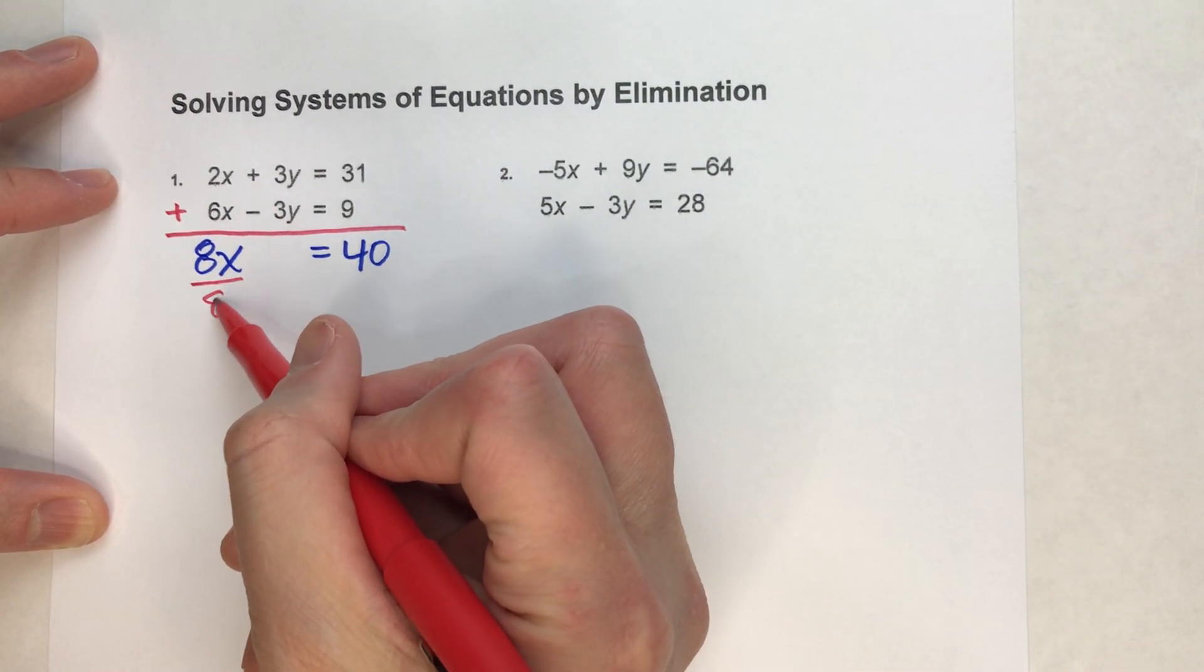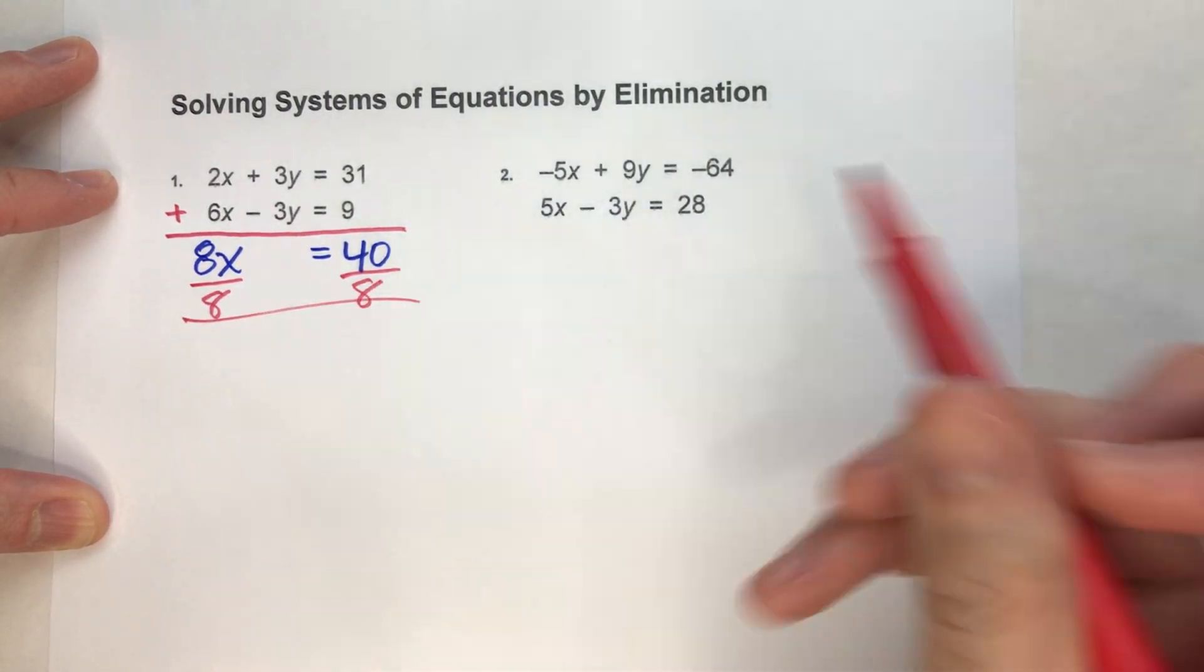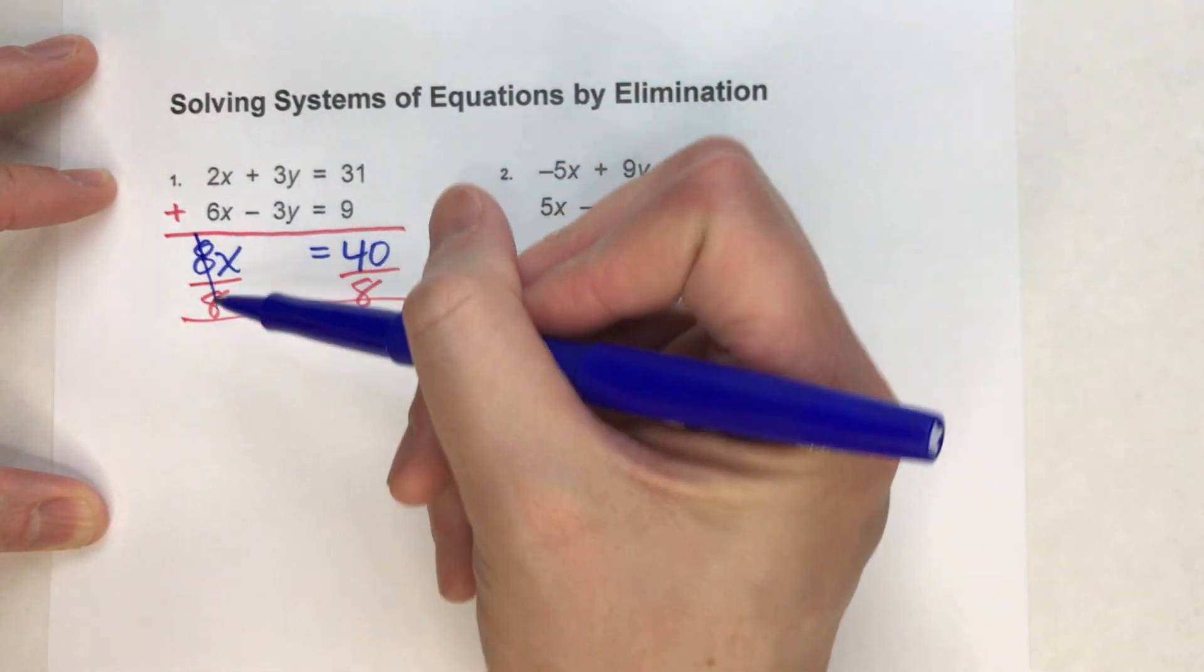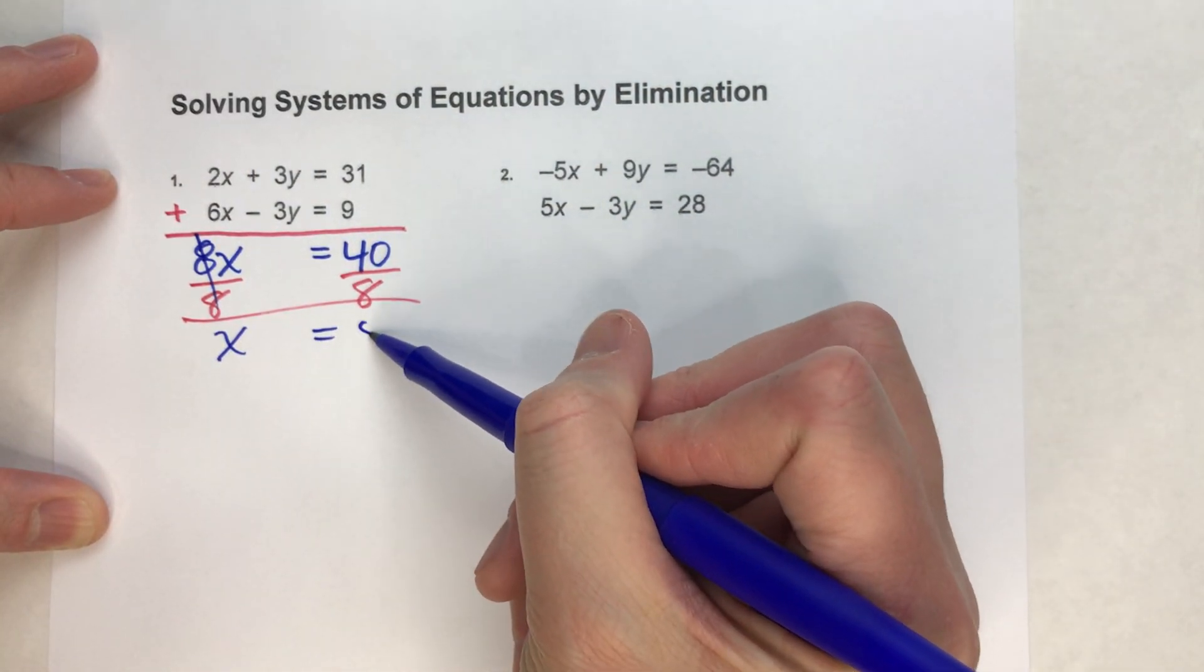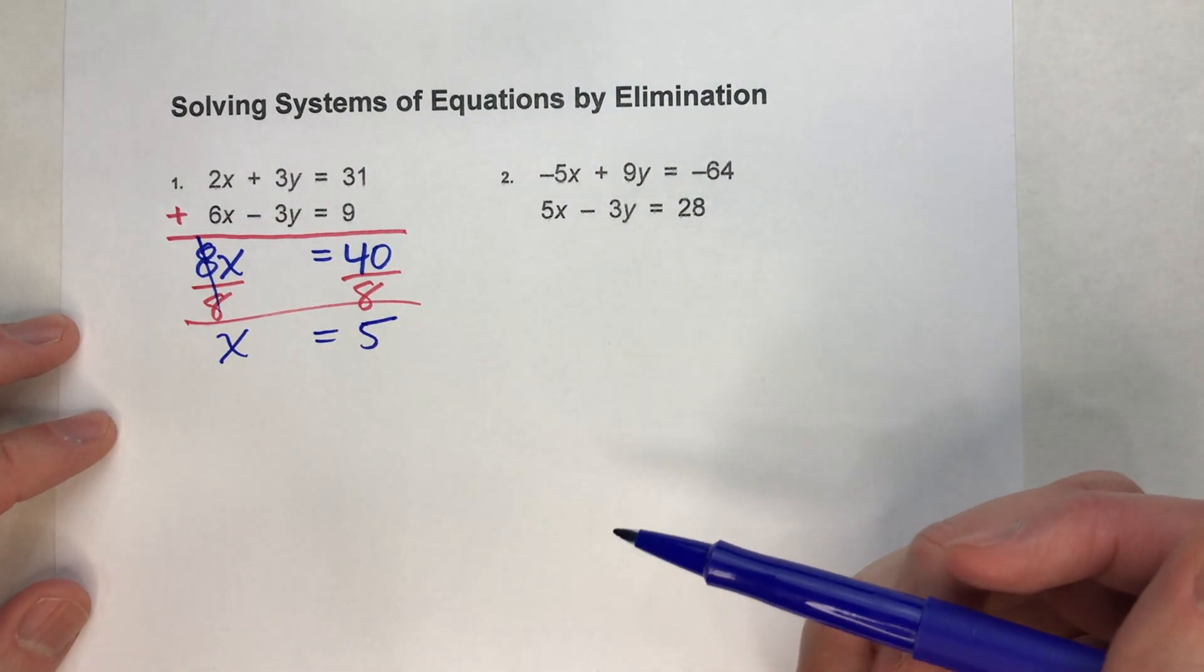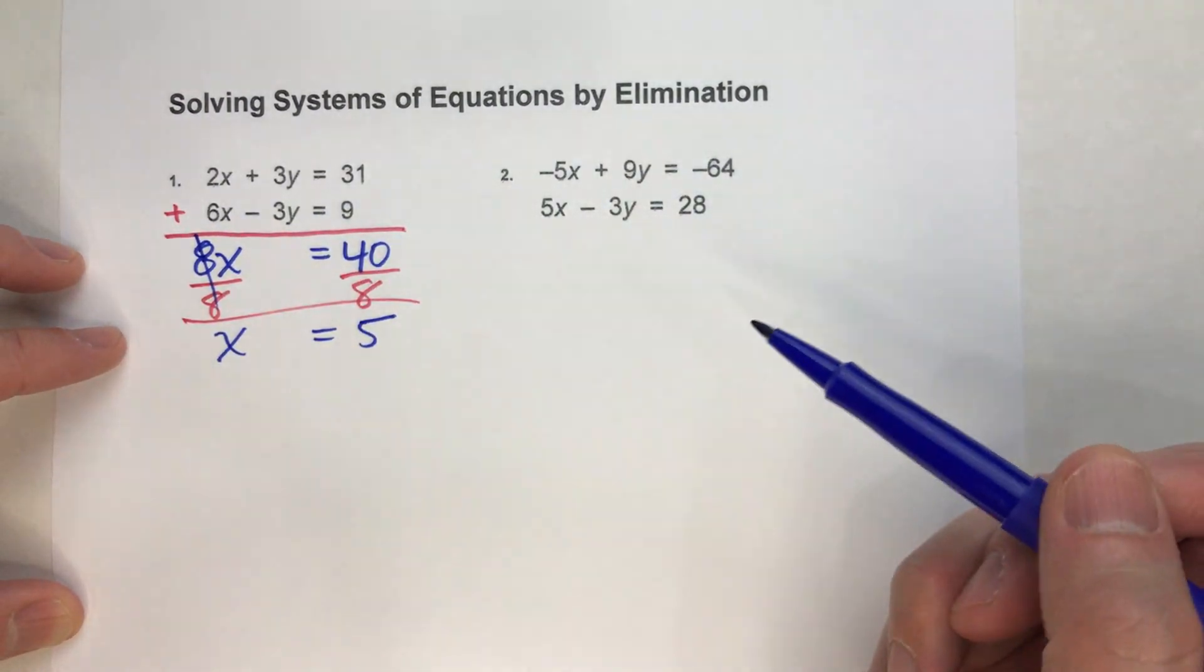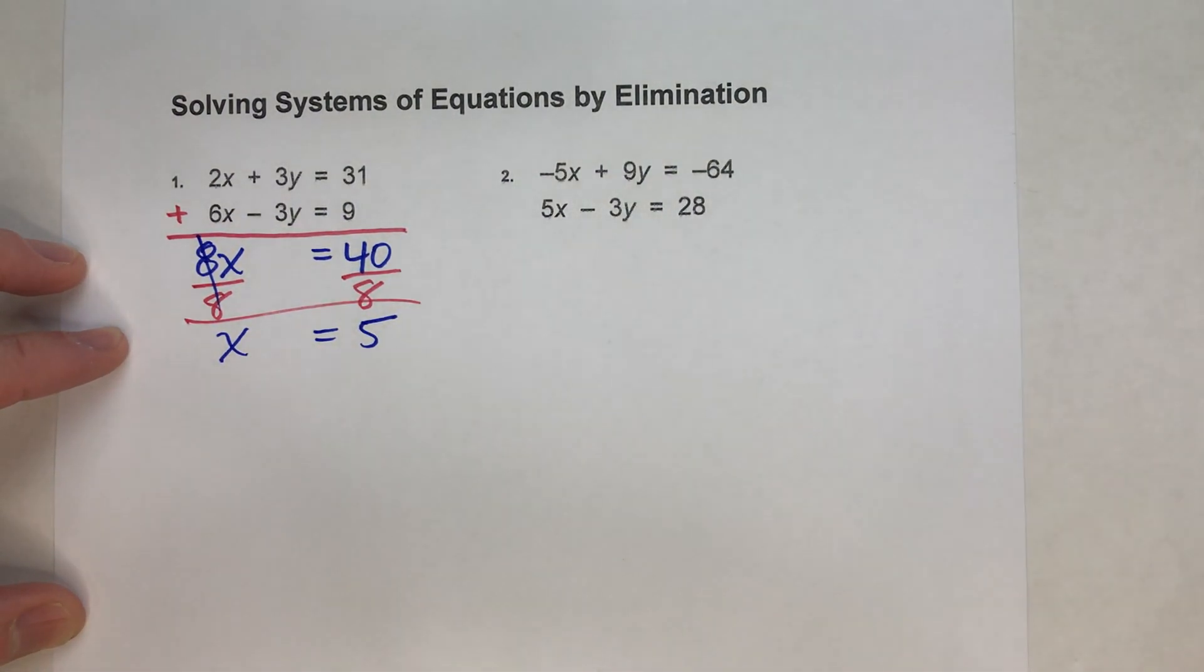I'm going to divide both sides by 8. When I do that, I end up getting x equals 5. And now I've gotten the x value for the system of equations.